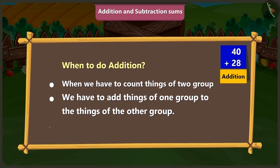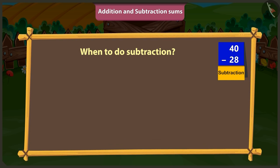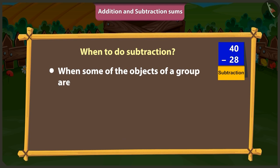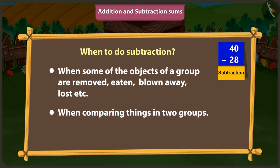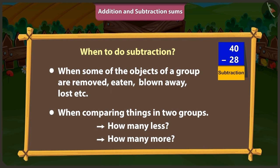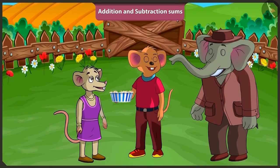When to do addition? Listen carefully. When we have to count things of two groups, or we have to add things of one group to things of another group, then we have to do addition. Or if you are asked 'total how many,' then you have to do addition. And when to do subtraction? When some of the objects of a group are removed, eaten, blown away, lost, etc., then we have to do subtraction. And when comparing things in two groups — how many less or how many more — to know all that, we also have to do subtraction.